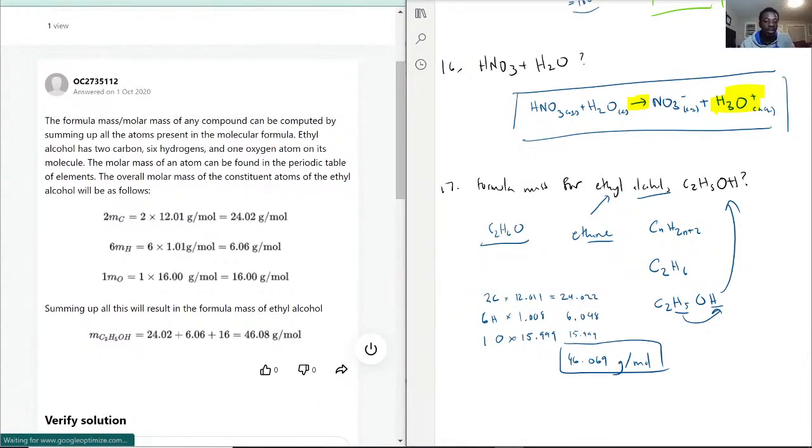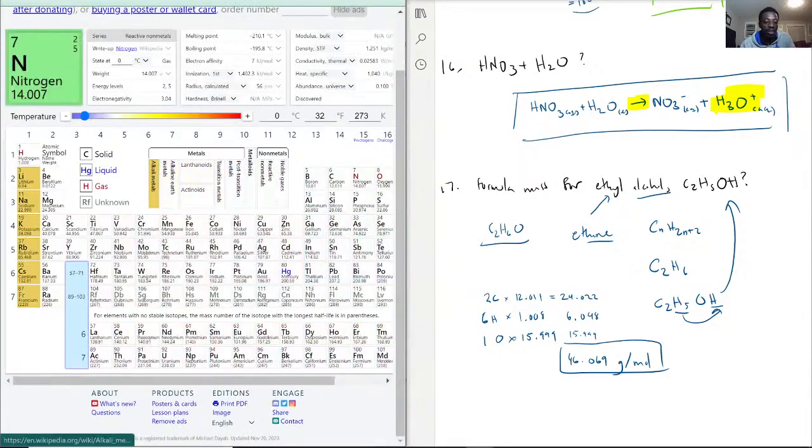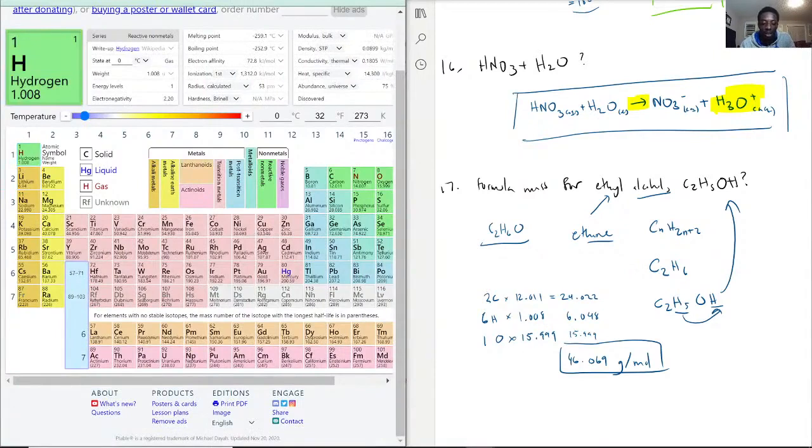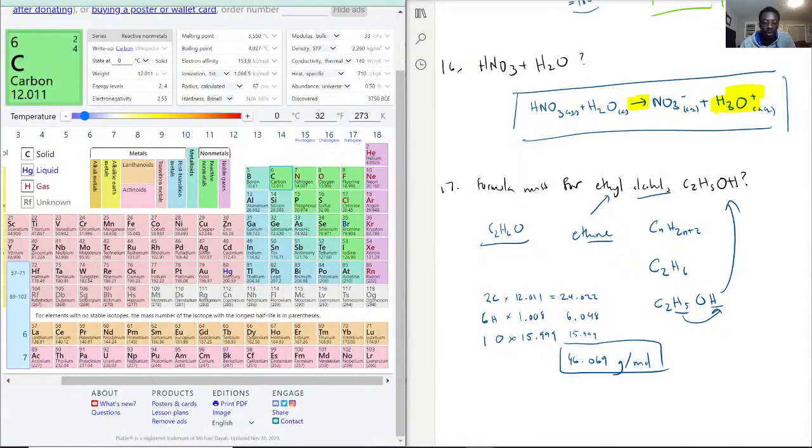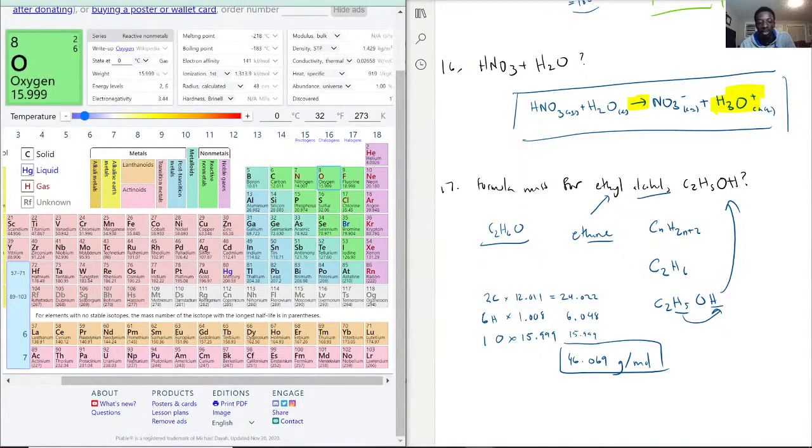For my periodic table, as you can see here, hydrogen is indeed 1.008, and carbon is 12.011, and our oxygen is 15.999.